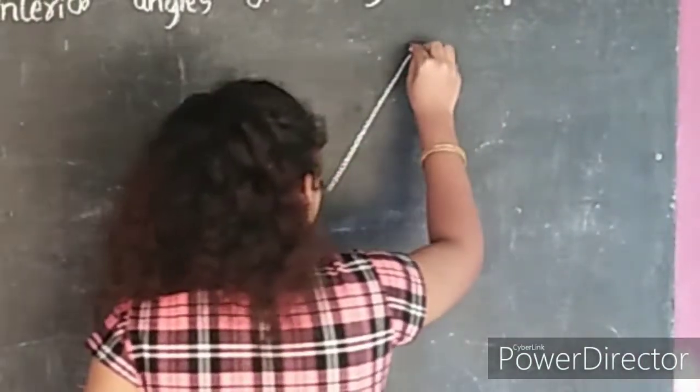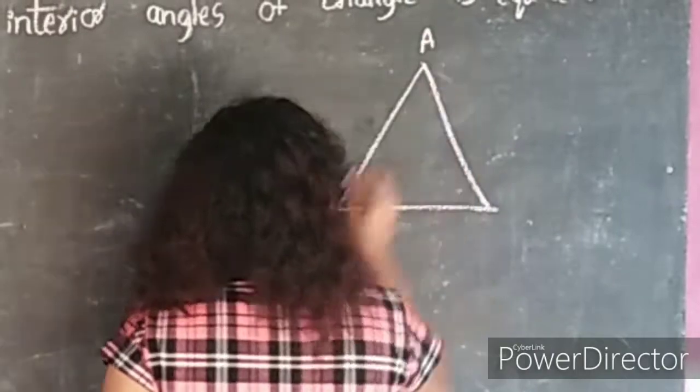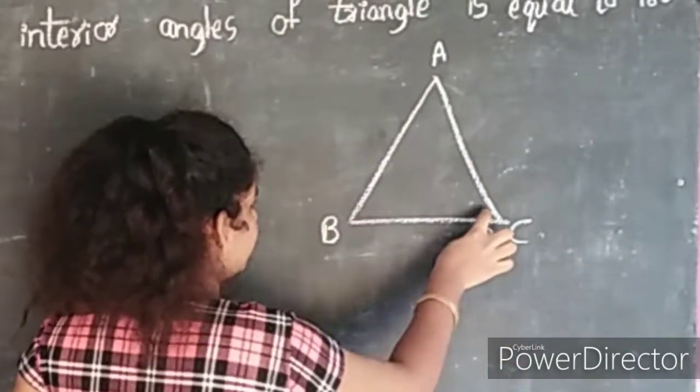I will draw a triangle. It is a triangle ABC. These are the interior angles.